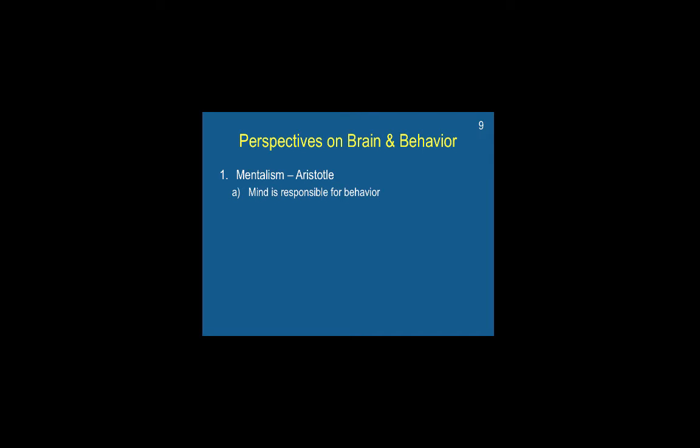Here's some basic history on perspectives of the brain and behavior relationship. The earliest work was with Aristotle and mentalism — the idea that the mind is responsible for behavior. Then that gave rise to dualism, primarily supported by Descartes, where the brain was the primary link between the mind and behavior, but they are two different matters. So with Descartes, you have these separate systems, the brain linking the mind and behavior, but the mind and behavior were distinct.